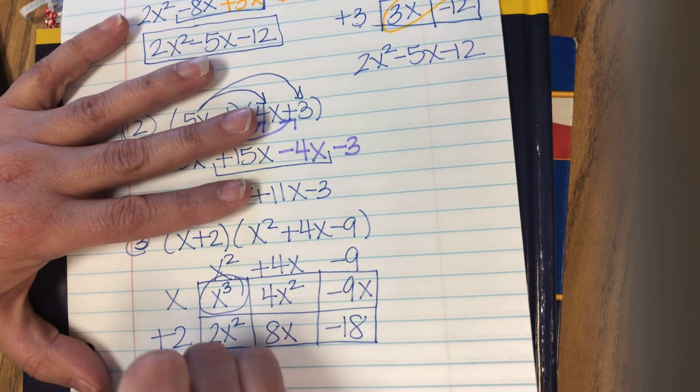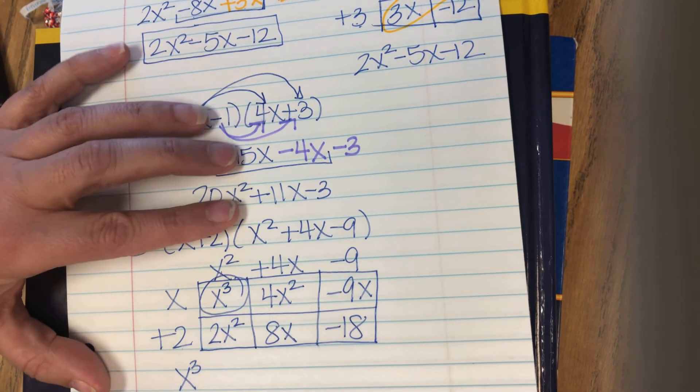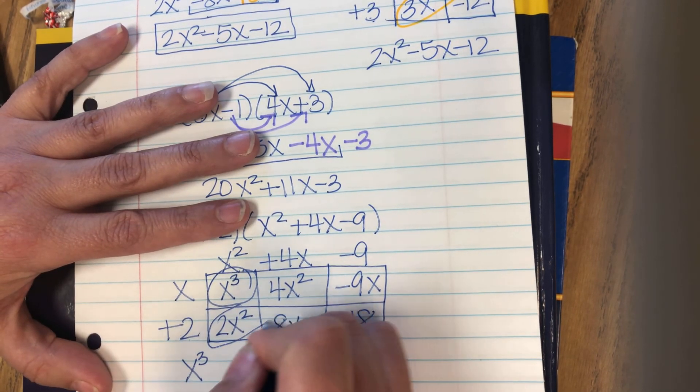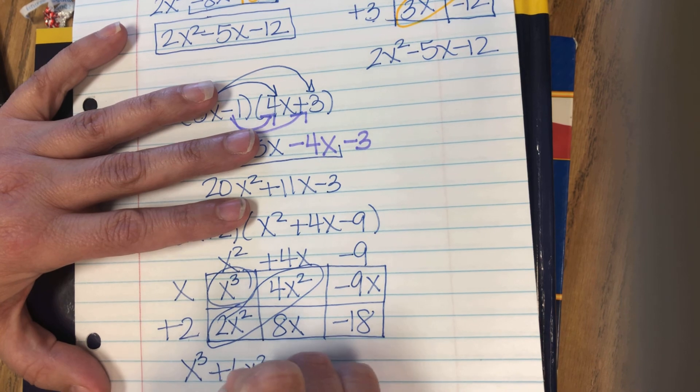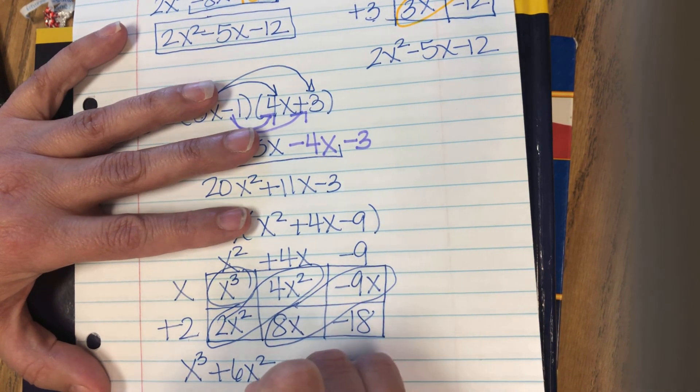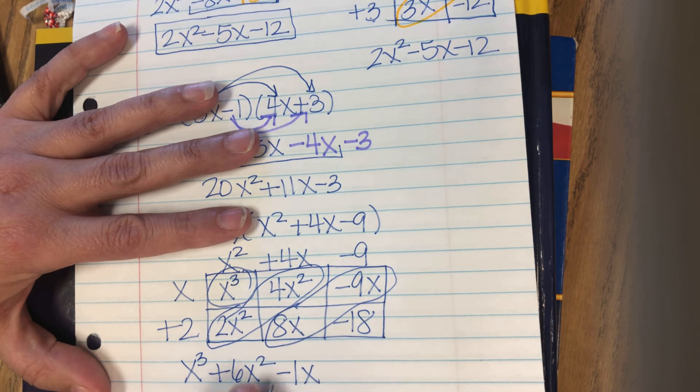I've got the x cubed. So I'm going to write that down first. I've got 2x squared and 4x squared. That makes 6x squared. 8x and negative 9x makes negative 1x or just negative x. And then minus 18.